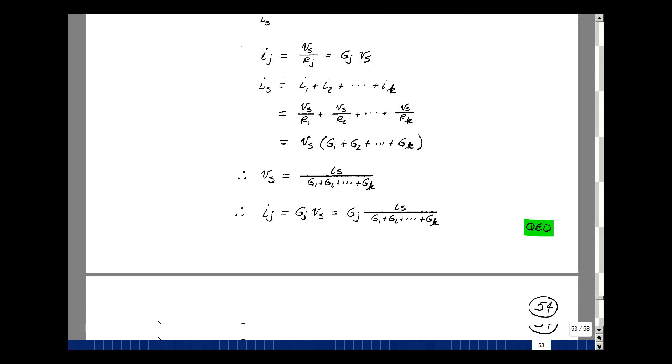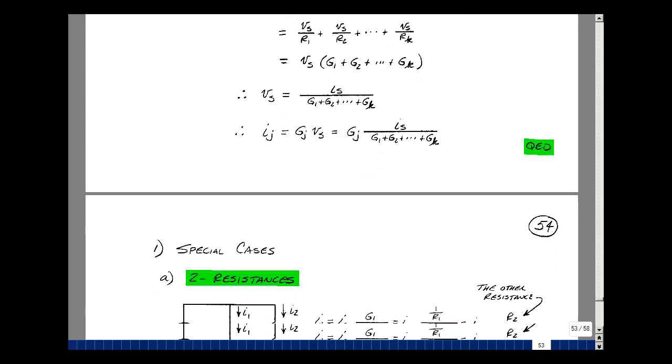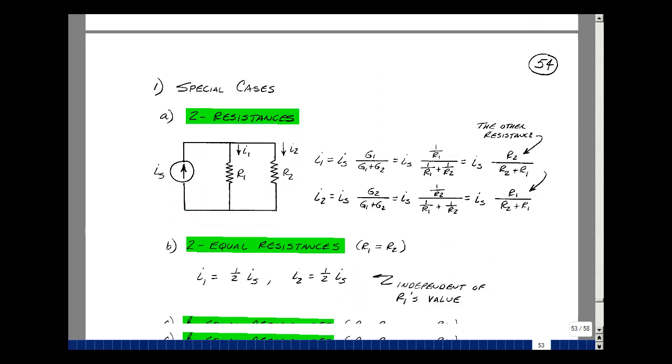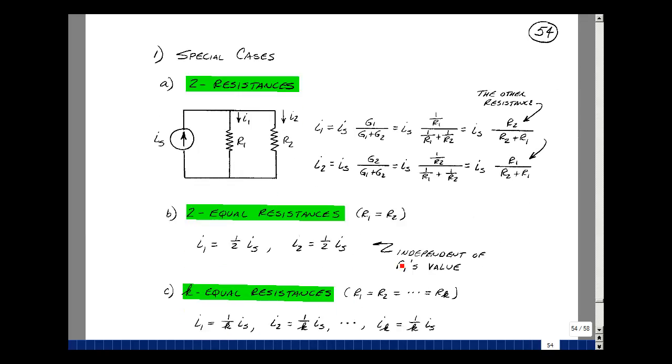Just like with the voltage divider, there's a couple special cases that are quite handy. First one is, suppose that you just have two resistances in parallel, and a current I sub S entering, and a current of I sub S leaving. Again, this could be a box with many things hooked up to it, or even just a current source. I'll call this one I1 and I2.